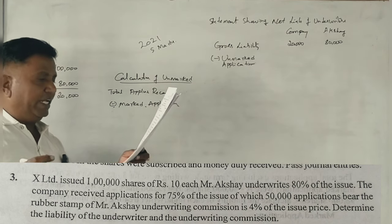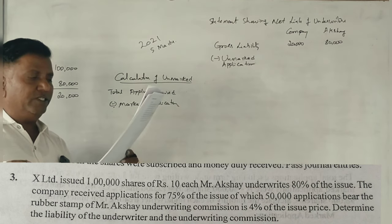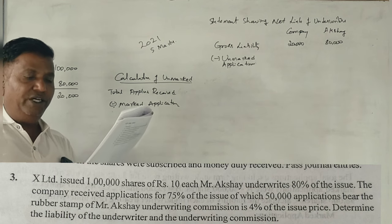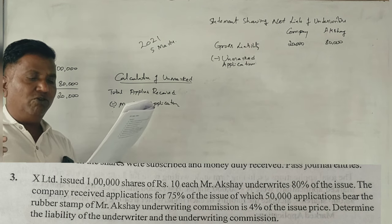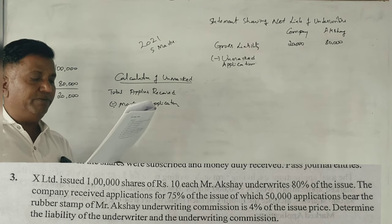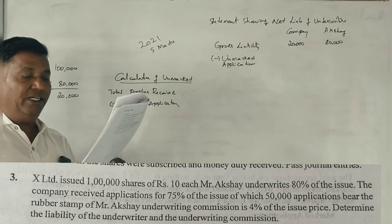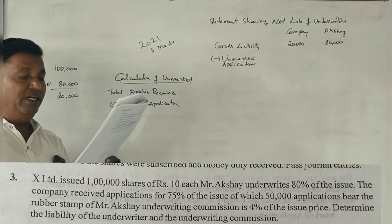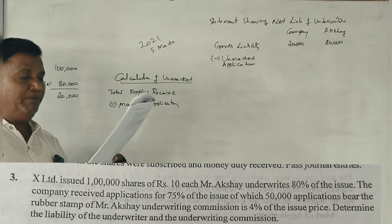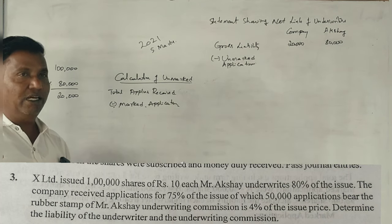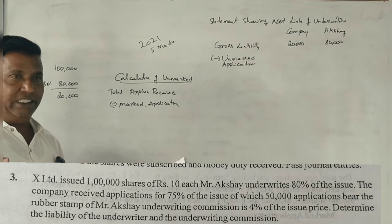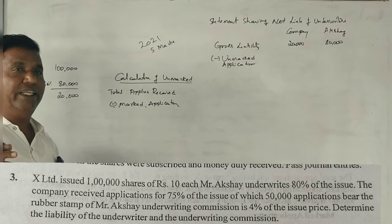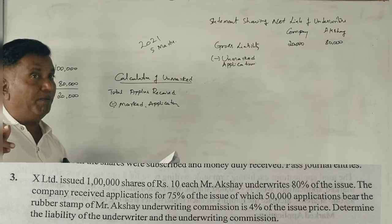The company received applications for 75% of the issue, with 50,000 applications marked per Mr. Akshay's stop. The underwriting commission is 4% of the issue price. Determine the liability of the underwriter and the underwriting commission.